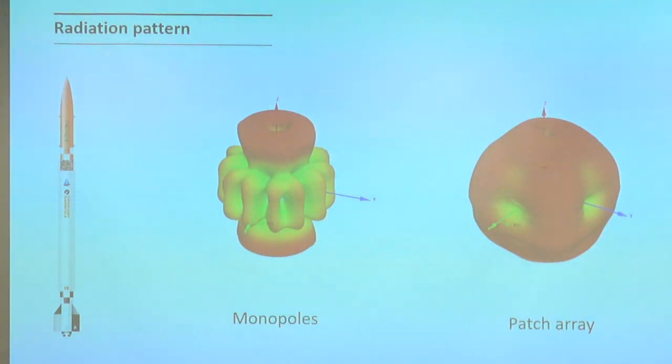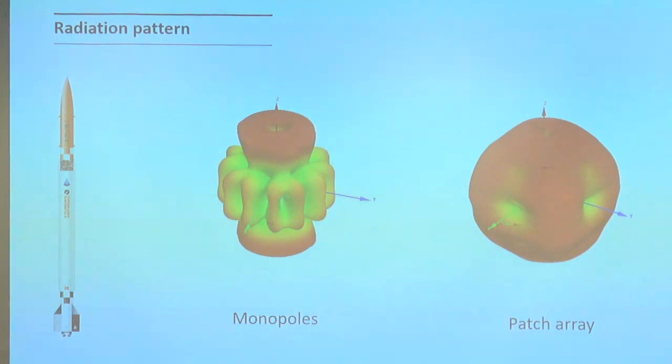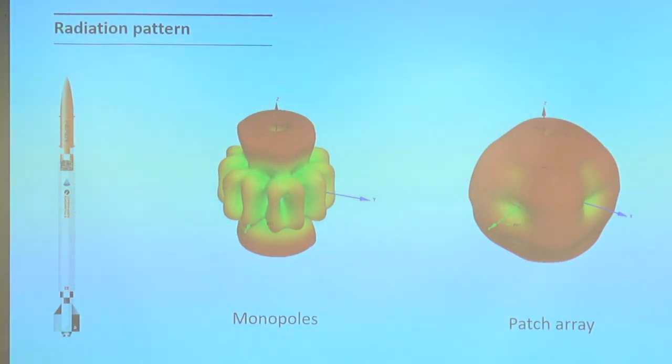These two pictures show the radiation patterns of the two antenna configurations, with the Z axis aligned vertically with the rocket. On the left, six monopole antennas mounted around the rocket radiate most of the power up and down, and not so much to the sides. That's okay as long as the ground station stays below the rocket — but sometimes things get out of control, as we've seen. The patch array has a much more isotropic radiation pattern, which is preferred because it gives us more freedom to place the ground station wherever we want, and it's also fine if the rocket starts spinning.